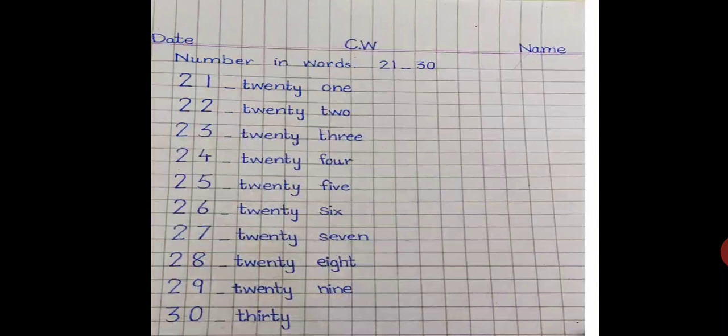What comes after 28? 29. T-w-e-n-t-y, 20. Take one finger gap. N-i-n-e, 9. Twenty-nine. And what comes after 29? 30. So you are going to write here spellings of 30: t-h-i-r-t-y, thirty. There is a difference between 13 and 30. It's thirty, so here write the spellings of 30: t-h-i-r-t-y.